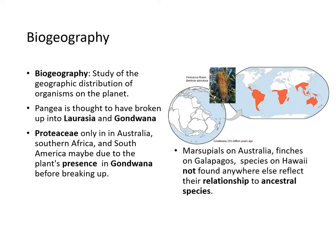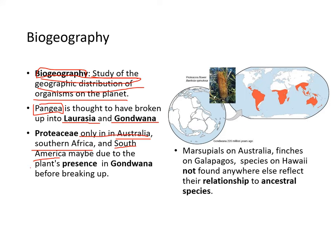Biogeography — the study of geographical distribution of organisms — can provide insights into evolution. Pangea is the landmass thought to have broken up into Laurasia and Gondwana. Proteaceae plants are present only in Australia, Southern Africa, and South America, possibly because the plant existed in Gondwana before it broke apart. Marsupials in Australia, finches on the Galapagos, and species in the Hawaiian islands also reflect relationships to ancestral species.